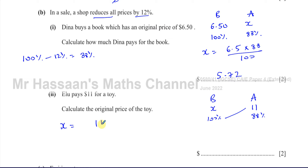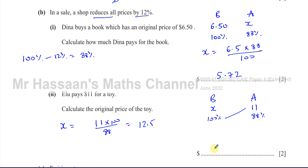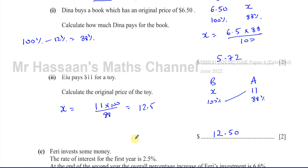To find the original price x, multiply 11 by 100 and divide by 88: x = 11 × 100 ÷ 88 = 25/2 = 12.5. For currency, write this as $12.50. Alternatively, we can say 88/100 × x = 11, so x = 11 × 100/88, giving the same answer of $12.50.